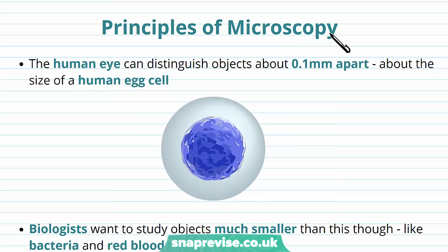So we need to understand how microscopy actually works before we delve into how the microscopes work as machines. When we're looking at particular structures with the human eye, we can only distinguish things that are about 0.1mm apart. This is just about the size of a human egg cell, about a tenth of a millimetre.